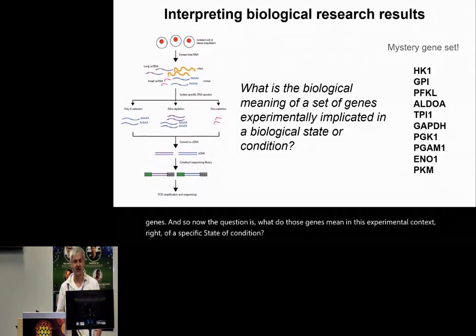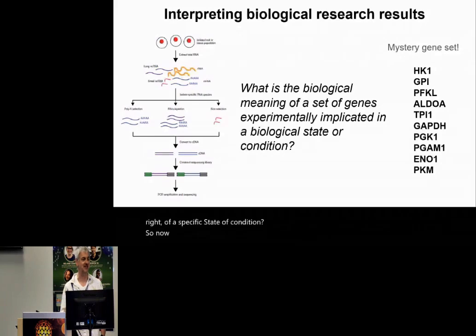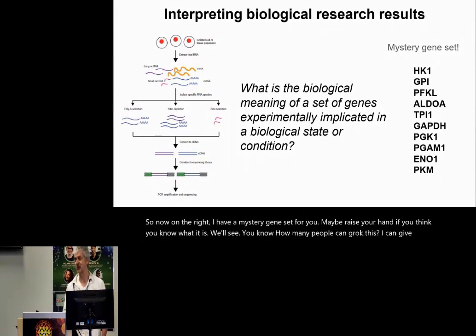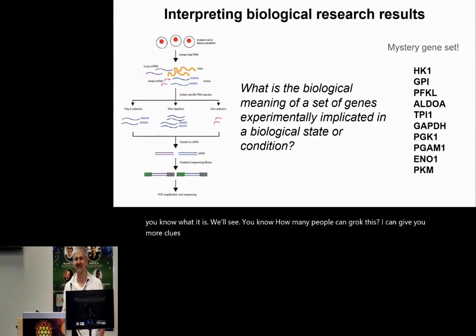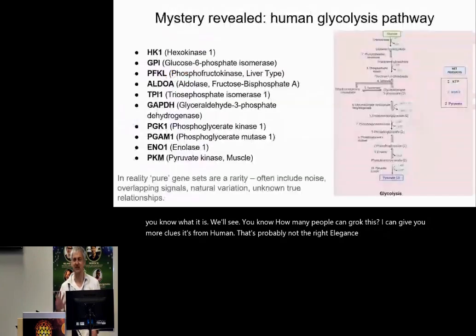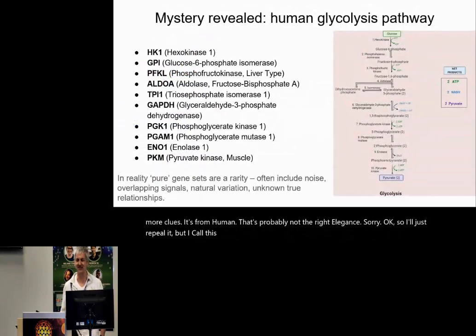On the right, I have a mystery gene set for you. Maybe raise your hand if you think you know what it is. We'll see how many people can grok this. I can give you more clues — it's from human. I'll just reveal it: the glycolysis pathway, right, central to life.